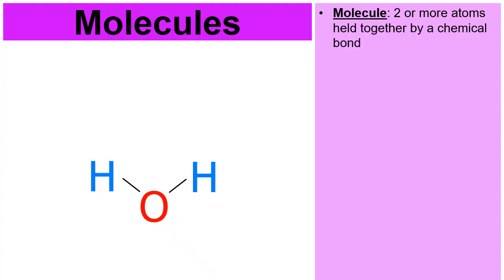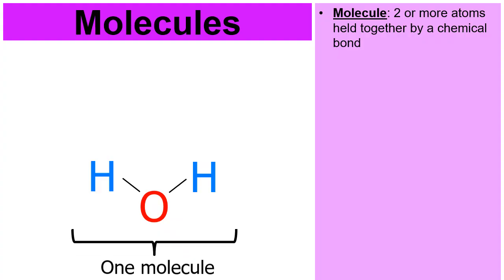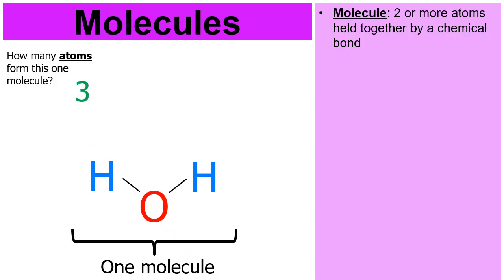What you see in the picture is one molecule — two H's and an O. I hope you know that's water. That's one molecule of water. Notice if I were to ask you how many atoms form this molecule, the answer is three. Two hydrogens plus one oxygen makes three.